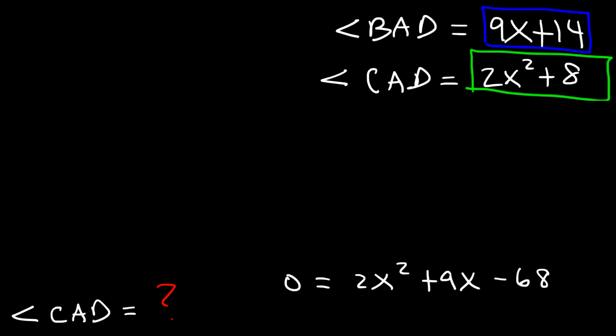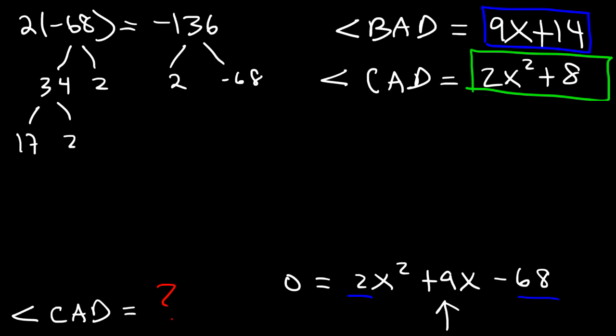So now what we need to do is factor this expression. How can we factor 2x squared plus 9x minus 68? Well, the first thing we need to do is multiply the leading coefficient by the constant term. So 2 times negative 68 is negative 136. Now, we need to find two numbers that multiply to negative 136, but that add to the middle coefficient of 9. So what are those two numbers? Well, let's find out. Factors of 68 are 34 and 2, so that means 34 goes into 136. And factors of 34 are 17 and 2.